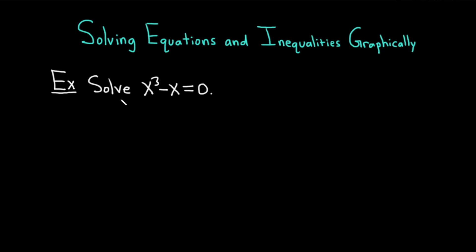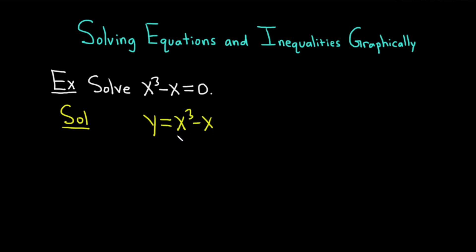Let's start by solving this equation. The directions say to solve x cubed minus x equals zero. To do this problem, we're going to put this into our calculator and graph y equals x cubed minus x. We're going to find when y equals zero, which means finding the x-intercepts of this graph — those will be the solutions to this equation.